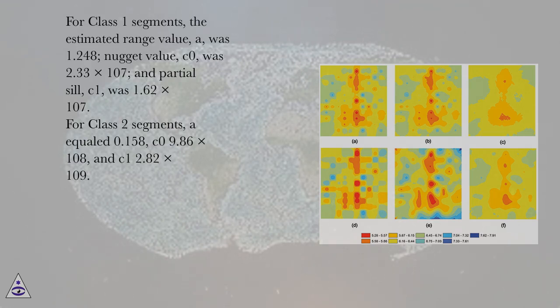For class I segments, the estimated range value A was 1.248, nugget value C0 was 2.33 times 10^7, and partial sill C1 was 1.62 times 10^7.